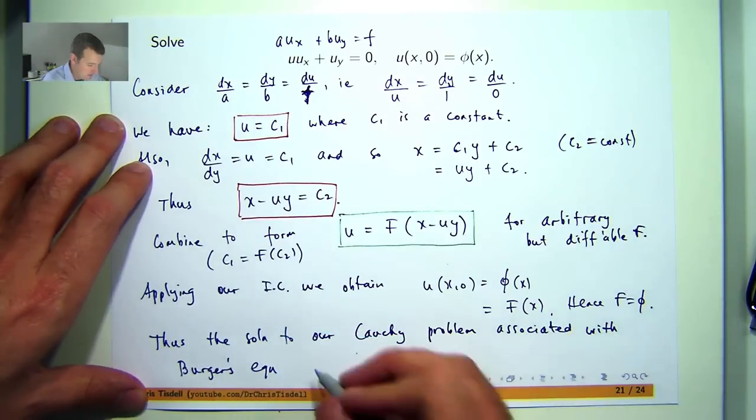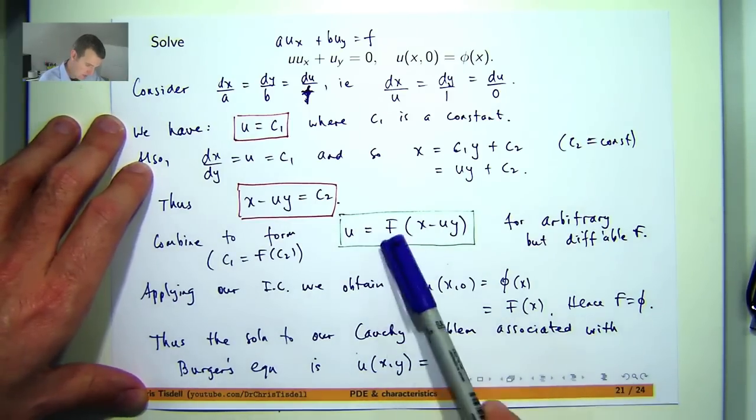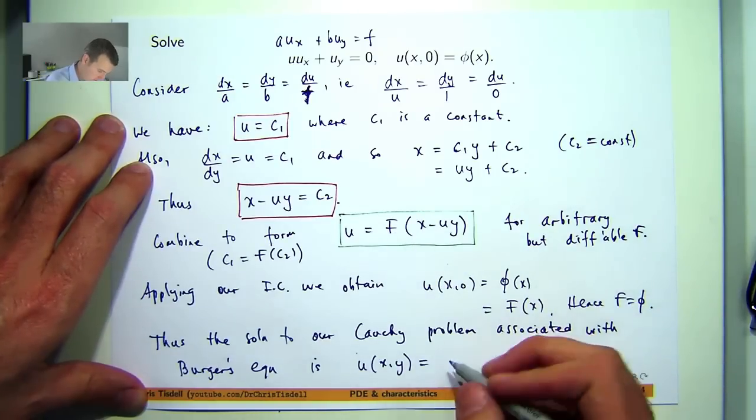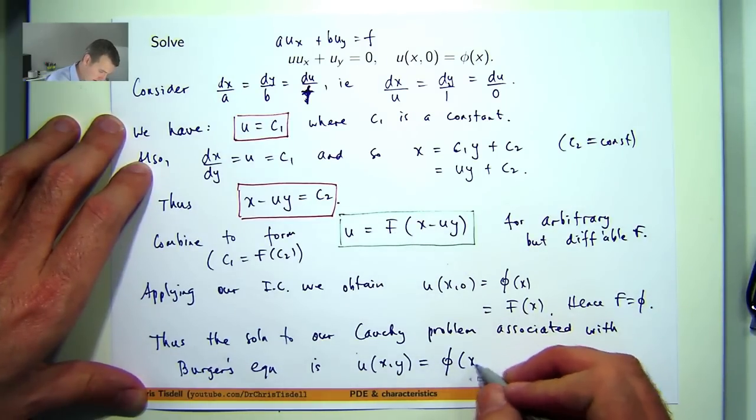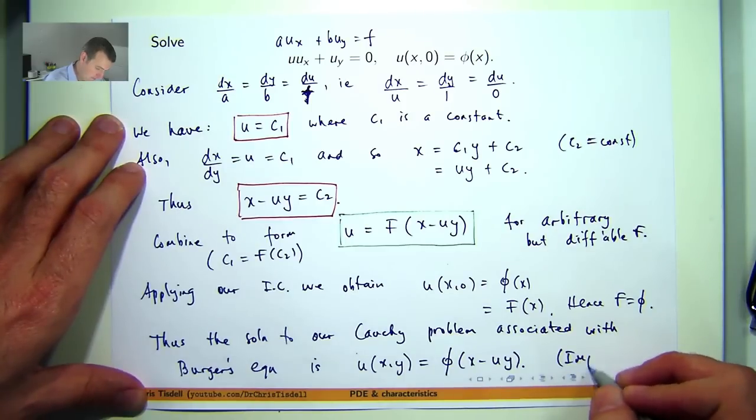The homogeneous form is the following. So it's this with big F replaced by this phi. And it's in the implicit form here.